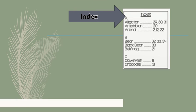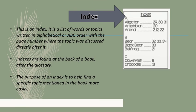Index: this is an index. It is a list of words or topics written in alphabetical order with the page number where the topic was discussed directly after it. Indexes are found at the back of a book after the glossary. The purpose of an index is to help find a specific topic mentioned in the book more easily.